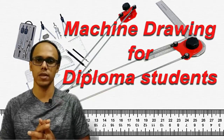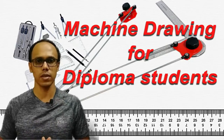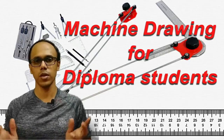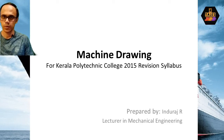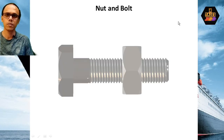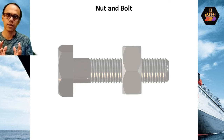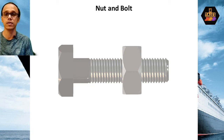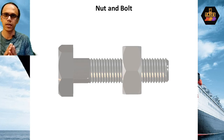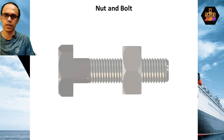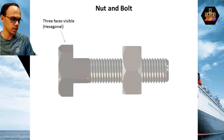We will discuss the overall picture in this video. Let us go to the slides. We will start the slide. We will discuss the assembly of the nut and bolt — the hexagonal nut and bolt and the square nut and bolt. We will discuss both types in this video.